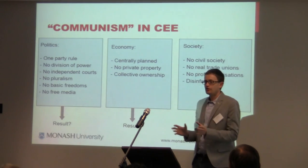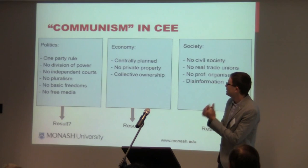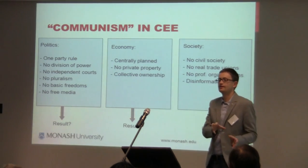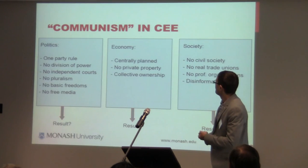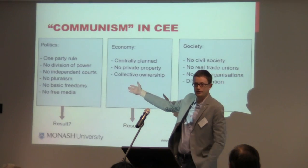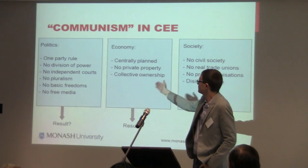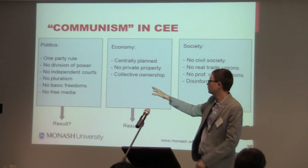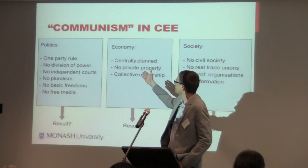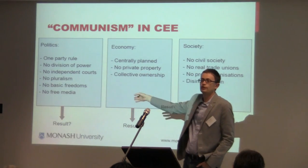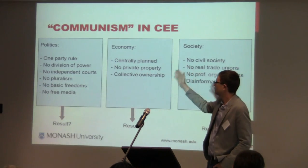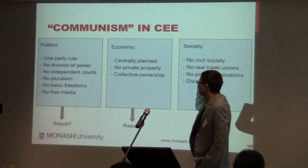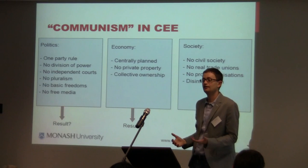The transformation process was really difficult, and the main reason was that communism took place in all parts of society. In politics, of course, there was one-party rule — the communist party of each respective country — but they were all directed from Moscow. There was no division of power, no pluralism, no NGOs, nothing like that. No basic freedoms, no free media — nothing you take for granted today.